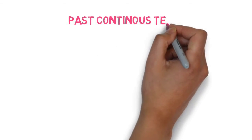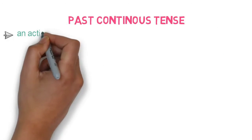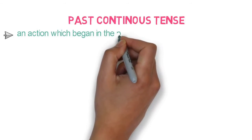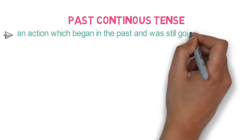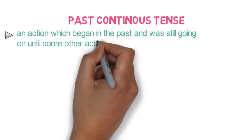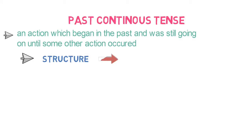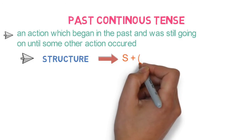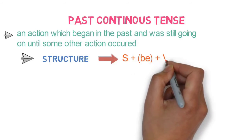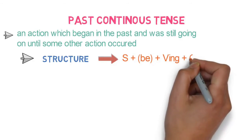Past continuous tense. It refers to an action which began in the past and was still going on until another action occurred. Structure of this sentence is subject plus be verb plus verb ing form plus object.